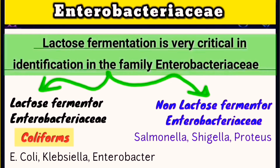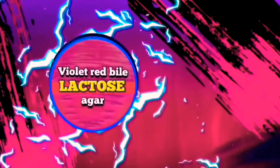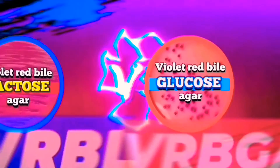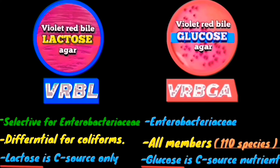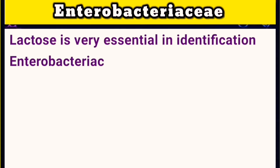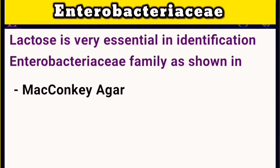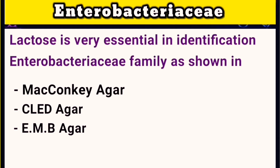This division explains the two different culture media types that are identical except for their sugar content. These are violet red bile glucose agar (VRBG) and violet red bile lactose agar (VRBL). VRBG is selective for all members of Enterobacteriaceae, while VRBL is differential for lactose-fermenting coliforms. Lactose can also be added to other gram-negative selective media such as MacConkey, CLED, Eosin Methylene Blue, and triple sugar iron agar.